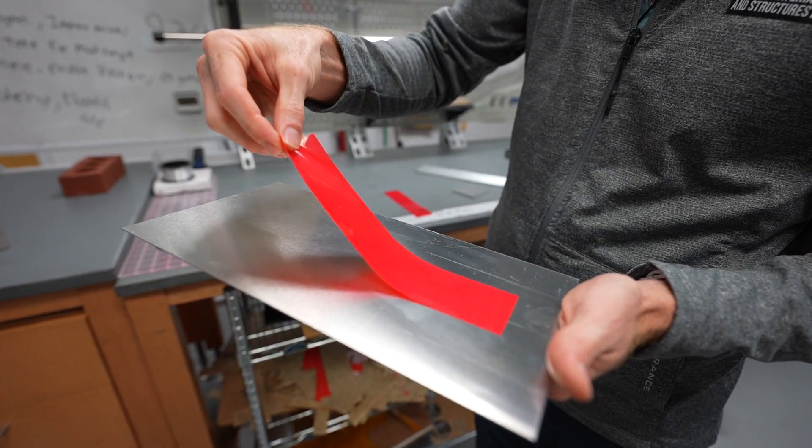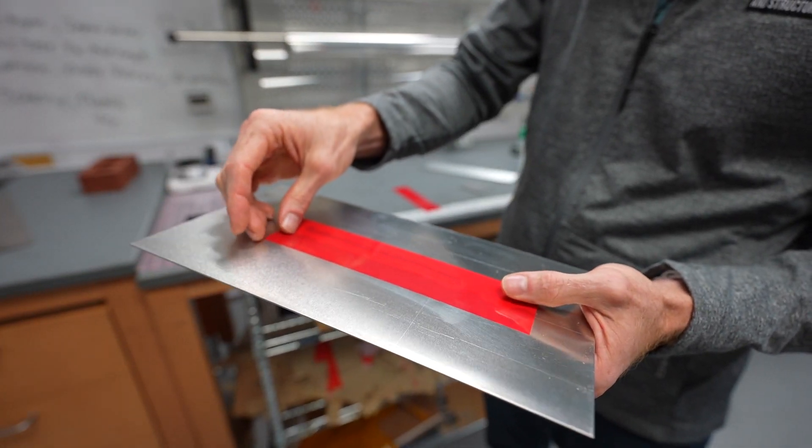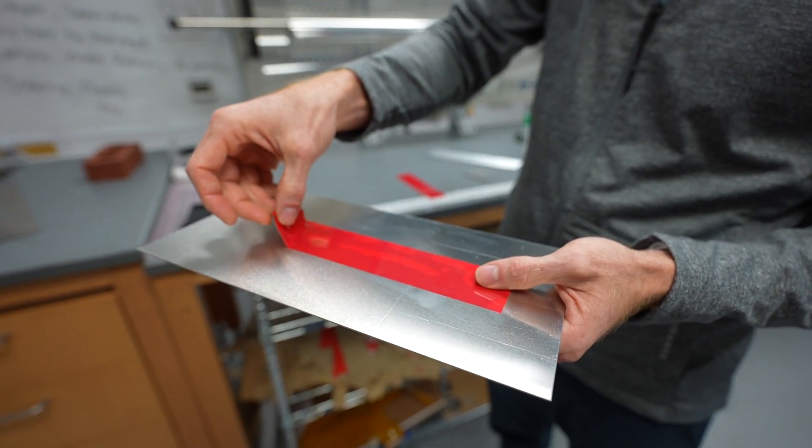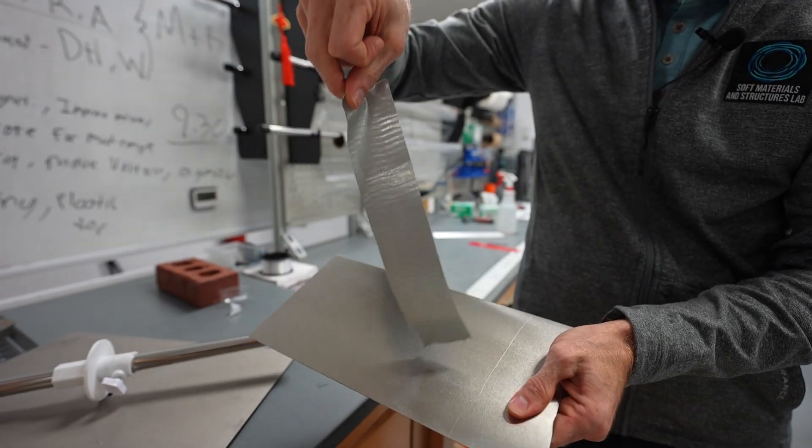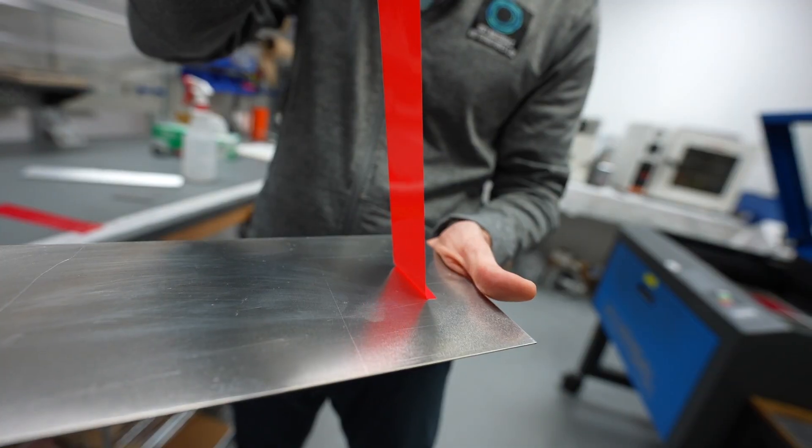Most adhesives, you take them, put them in contact with the substrate, and then you take one side and peel it off. That separation of the interface always goes in one forward direction, and that sets the adhesion capacity of that film.